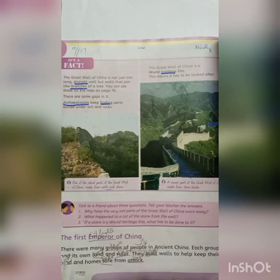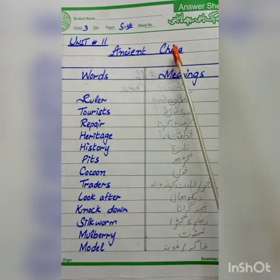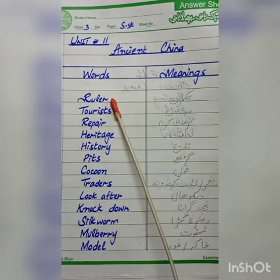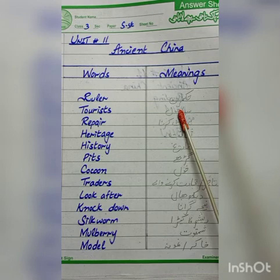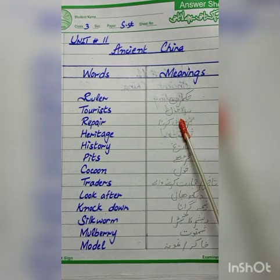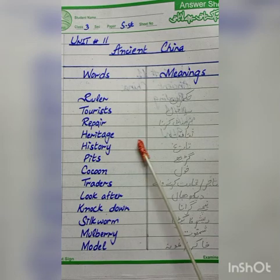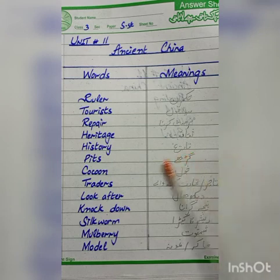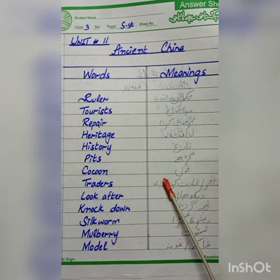Now we will start our day 11 working. We will start chapter number 11, ancient China — words meanings. Our first word is 'ruler' means hukmaran. 'Tourist' means seyaanho. 'Repair' means marammat karna. 'Heritage' means sakafat. 'History' means tariq. 'Pits' means gharay. 'Cocoon' means hole. 'Traders' means tajir, ajalat karna walay.